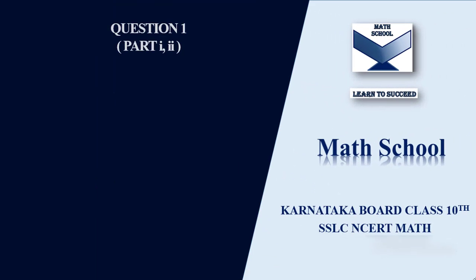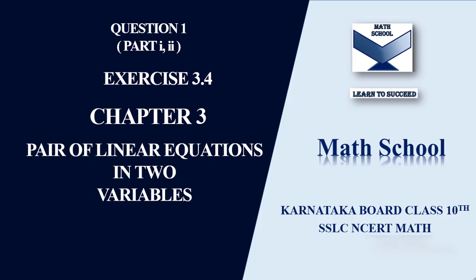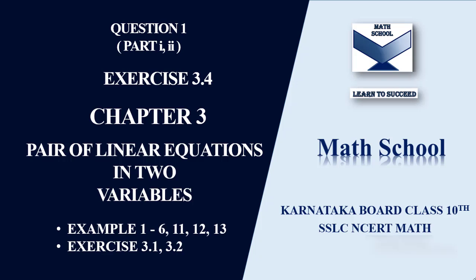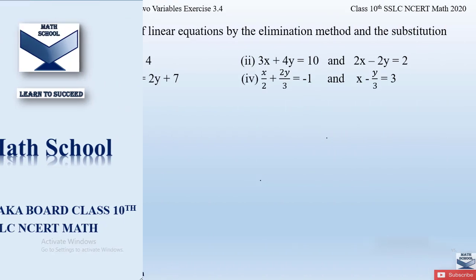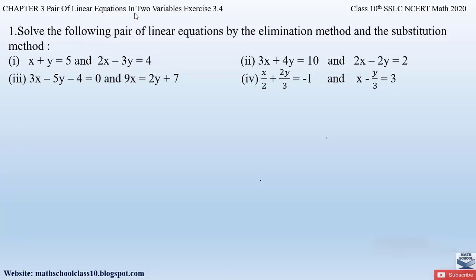Welcome back to Math School. In today's video, let us solve question number 1, parts 1 and 2, from Exercise 3.4, Chapter 3: Pair of Linear Equations in Two Variables. In my previous videos I completed examples 1 to 6 and problems from exercises 3.1 and 3.2. Find the links in the description below. We will solve the pair of linear equations by the elimination method only, as the substitution method has been removed from the syllabus for now.